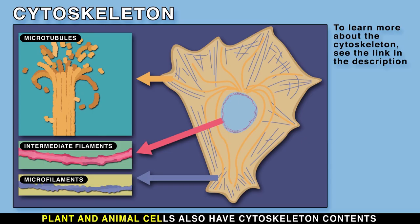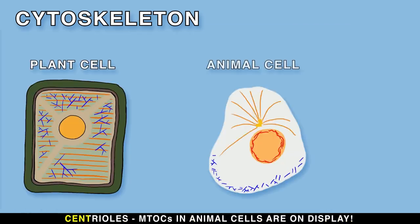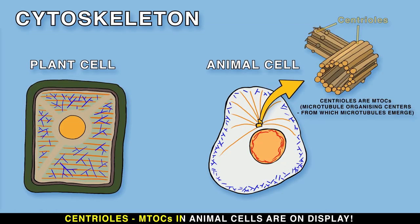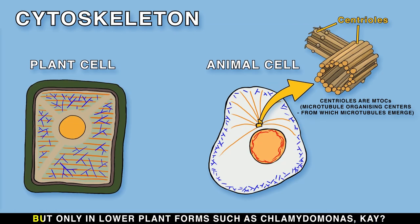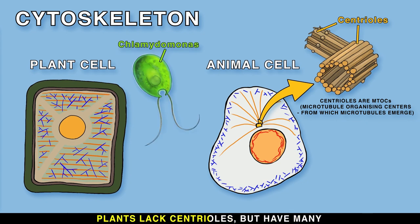Plant and animal cells also have cytoskeleton contents: microtubules, intermediate filaments, and microfilaments. Centrioles and MTOCs in animal cells are on display, but only in lower plant forms such as Chlamydomonas. Plants lack centrioles but have many small nucleation sites.